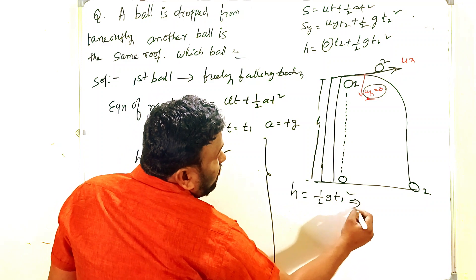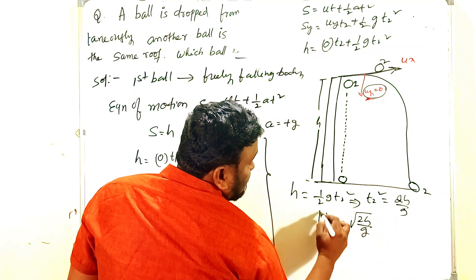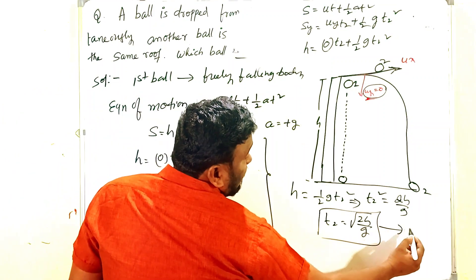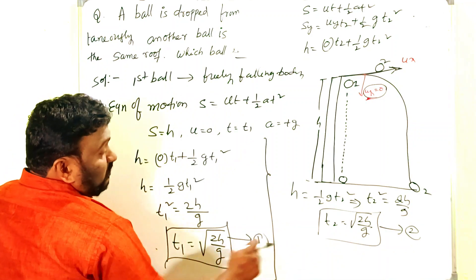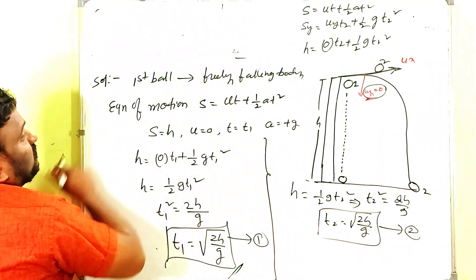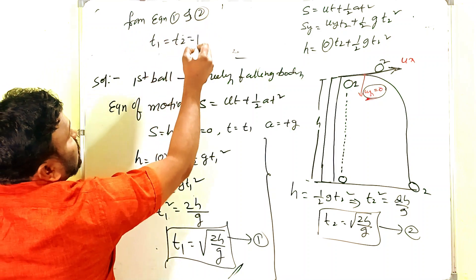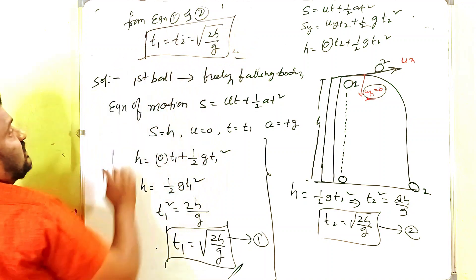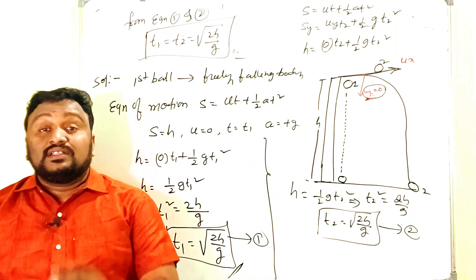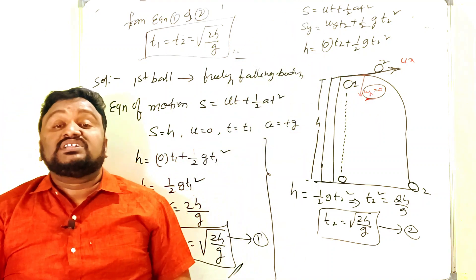From this: t₂² = 2h/g, and t₂ = √(2h/g). Comparing equation one and two, we observe that t₁ = t₂ = √(2h/g). This means the time taken by both balls to reach the ground is the same — both arrive at the ground at the same time.